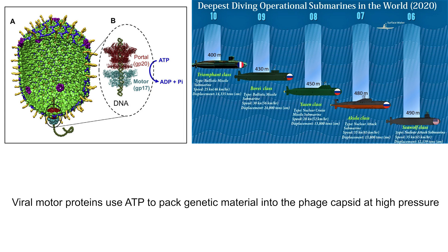That genetic material is packed incredibly tightly inside the capsid. In the case of DNA phages, a molecular motor protein binds the phage DNA and forces it into the capsid when it's produced. DNA is negatively charged, so it repels itself, and it has elasticity like a spring that resists compression. Packed into the capsid by the motor protein, the DNA exerts a pressure of around 50 atmospheres — the same pressure you would feel 490 meters underwater.